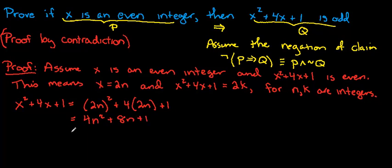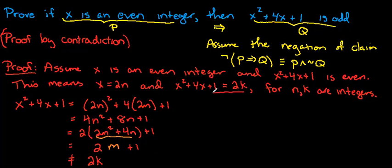And this is trouble, because look, this is just 2 times some integer plus 1. In other words, this cannot be equal to 2k, which is what we assumed that it was equal to. So let me just kind of highlight, this is a contradiction.